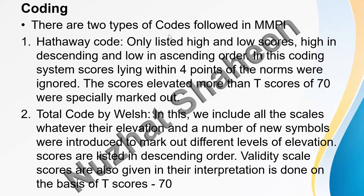In MMPI, it is crucial to do the coding so that the profile is safe and a clinician can understand the profile readout. Because this test assesses personal characteristics of a very personal nature, there are two types of coding: the Hathaway code and the Welsh code. In the Hathaway code, we only list high and low scores — high scores in descending order and low scores in ascending order.